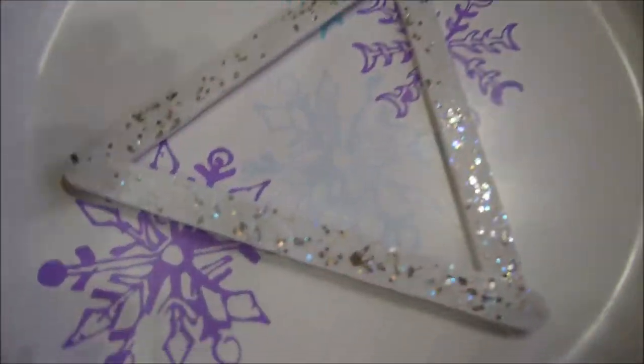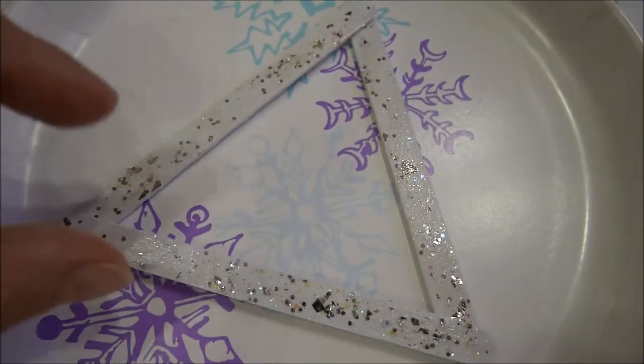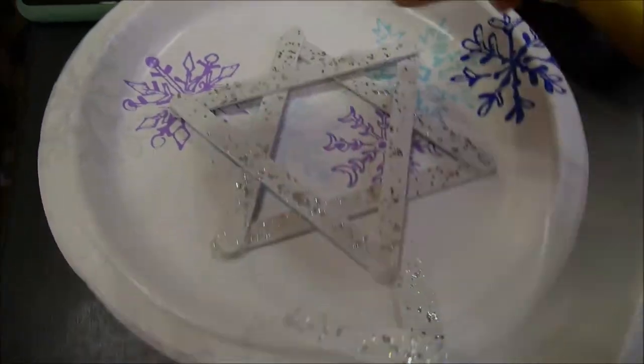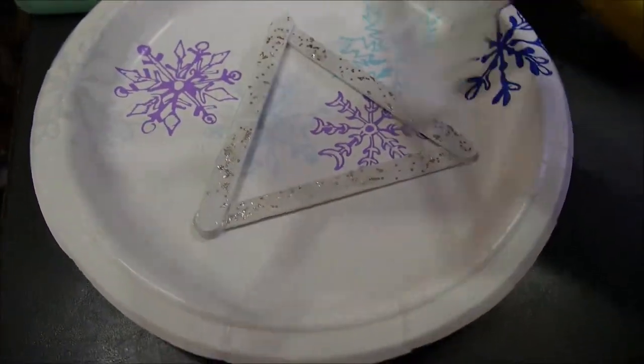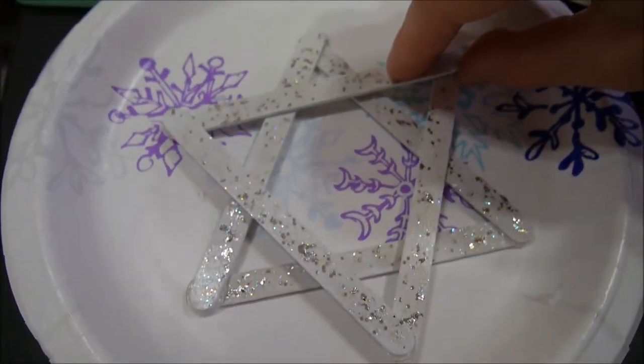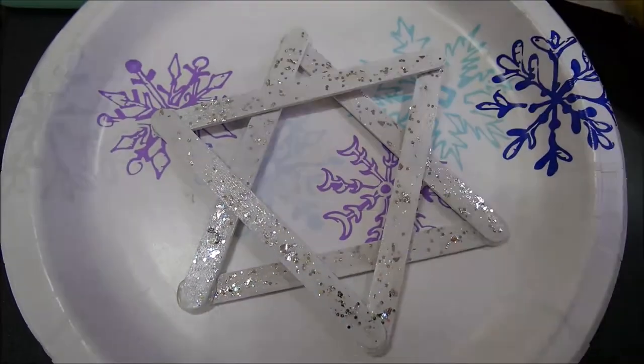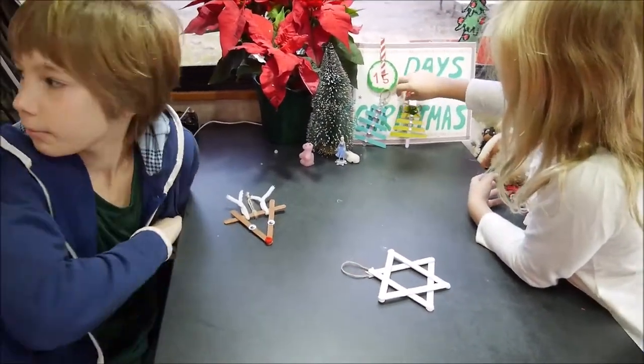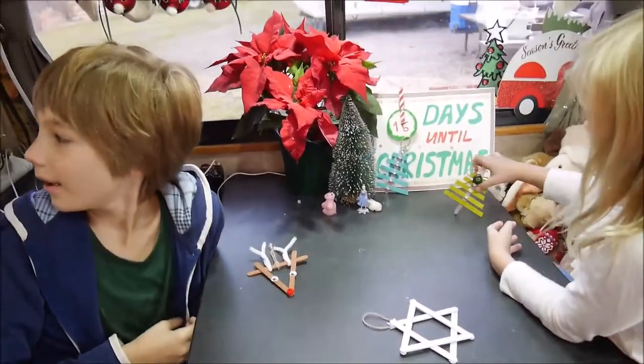And now the last one, the snowflake. It's a bit tricky since we have to glue everything without moving even a little bit. So two triangles I've made. And now I just put one on another and hot glue them and I'll have a beautiful star snowflake.